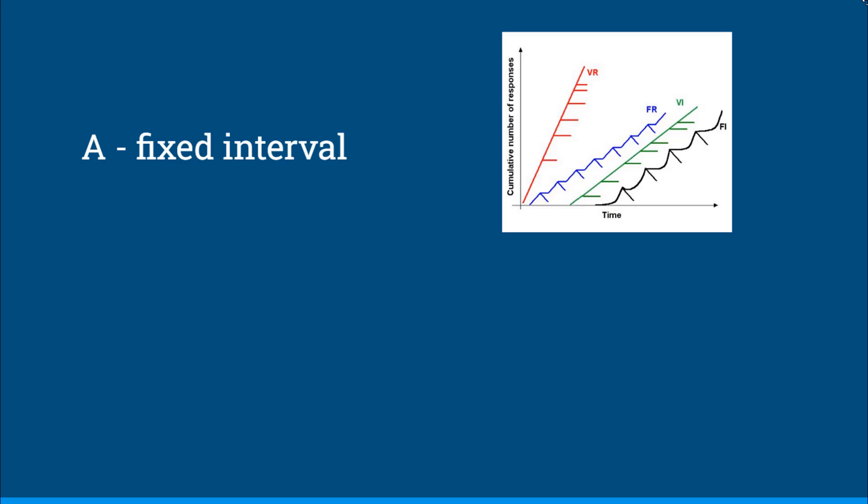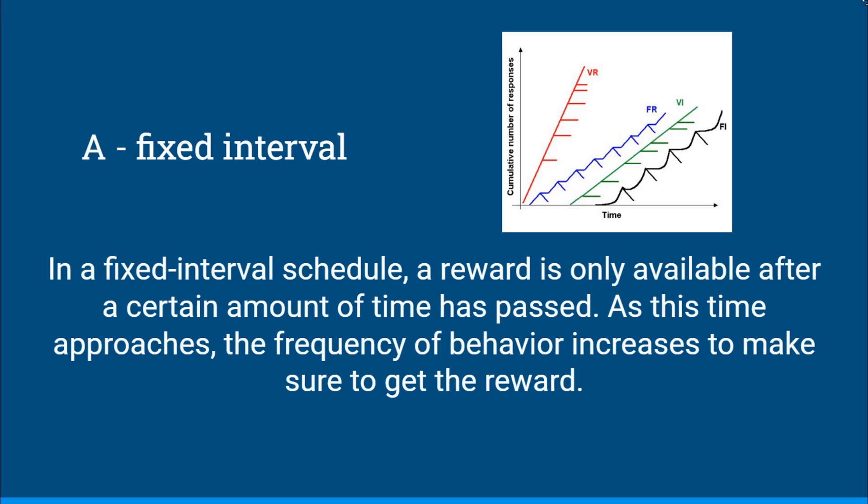And this would be A, a fixed interval schedule of reinforcement. In a fixed interval schedule, a reward is only available after a certain amount of time has passed. As the time approaches, the frequency of behavior tends to increase to make sure that you get the reward when it's available.